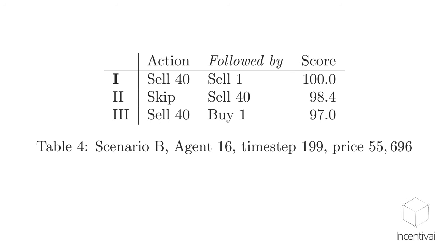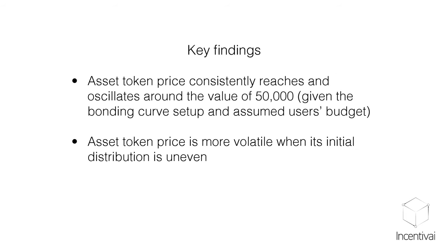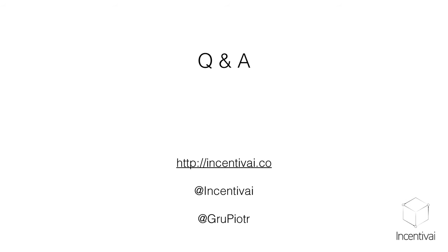The key findings from this simulation: the asset token price across all scenarios went up to around 50,000 and oscillated around that level. The amplitude of oscillation depended on how uneven the initial token distribution was. If price volatility is something you care about as a system designer, you might want to introduce measures making it difficult for particular agents to accumulate many tokens — for example by introducing a limit on how many tokens a single agent can buy early on.